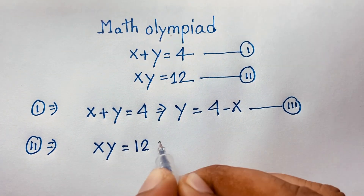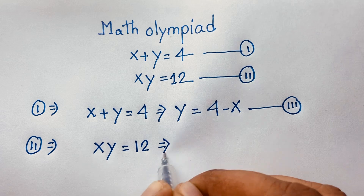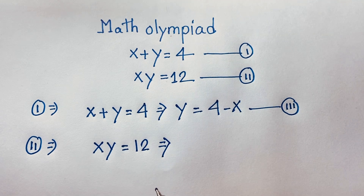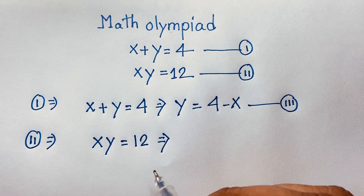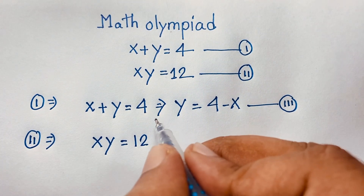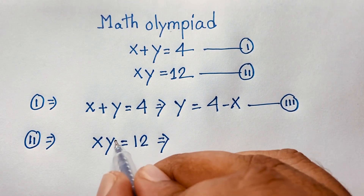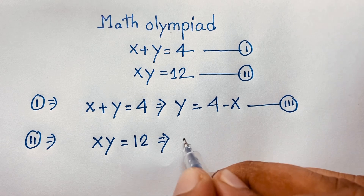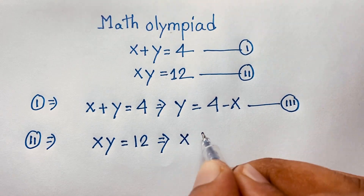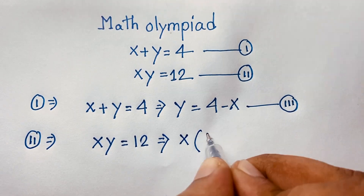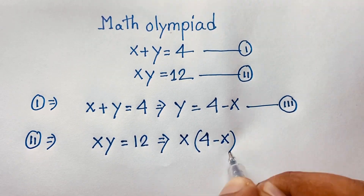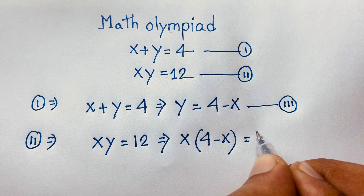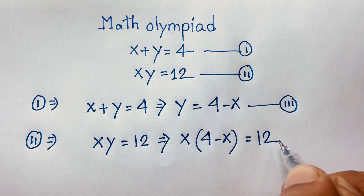Now our second equation is x times y is equal to 12. At this moment I substitute the value of y from the third equation: y is equal to 4 minus x. So it becomes x times (4 minus x) is equal to 12.